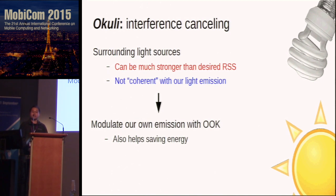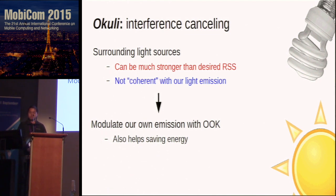We also realize that visible light channels are very busy and there exist many kinds of interference. The surrounding light sources may contribute to the RSS as well, and can actually be much stronger than the desired signal. However, these interferences are not coherent with our light emission, which means no matter whether we turn our LED on, the interference is always there and remains nearly constant. This means we can modulate our own emission with OOK to remove the interference by subtracting samples obtained during the on period from samples obtained during the off period. This also helps with energy saving, since it offers an opportunity to duty-cycle the light emission.